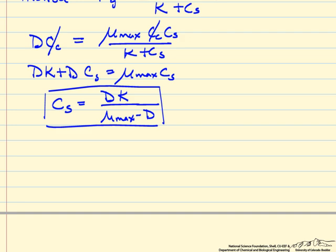The concentration of the substrate CS is related to the dilution rate D and the two constants. Something important to notice: the substrate concentration has to be less than or equal to the inlet substrate concentration CS0. Also, we must have umax greater than D — or equivalently, the dilution rate D must be less than umax — in order for CS to be a real, positive number.